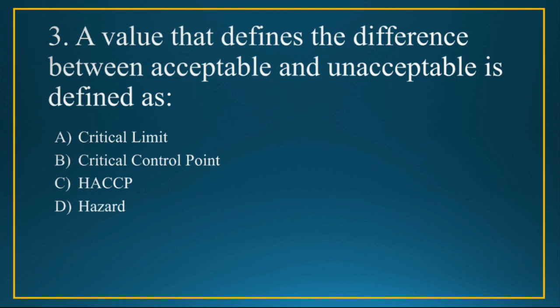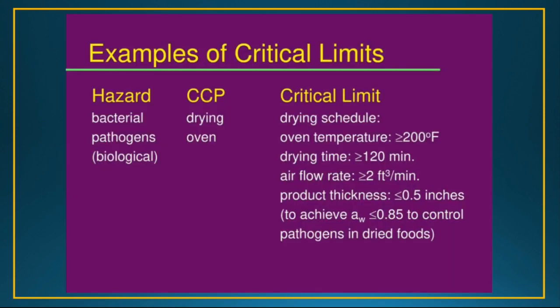Q3: The value that defines the difference between acceptable and unacceptable is defined as — critical limit, critical control point, or hazard? The answer is option A, critical limit. A critical limit is a maximum or minimum value to which a parameter must be controlled; if parameters are above or below that critical limit, the product will be unacceptable. For example, if the hazard is a pathogen and the critical control point (CCP) is the drying temperature — say 200°F — then if the temperature falls below 200°F, the product is unacceptable because the pathogen has not been properly destroyed.